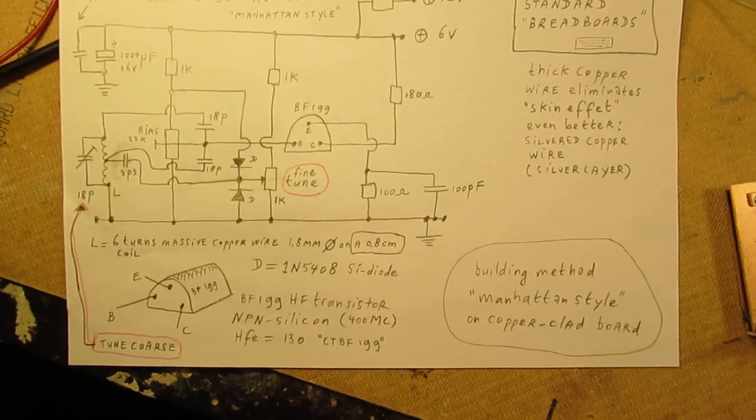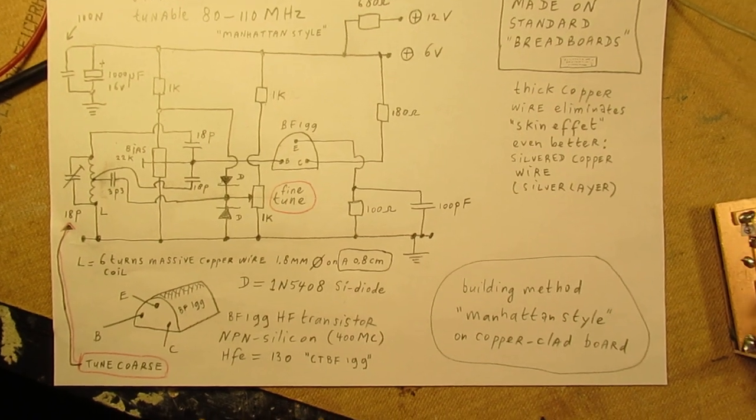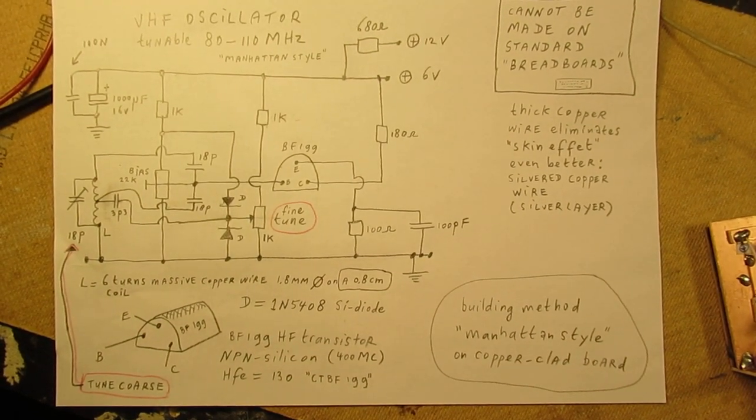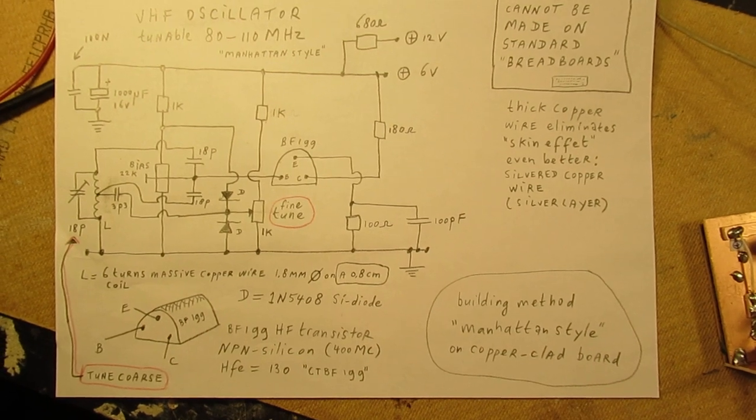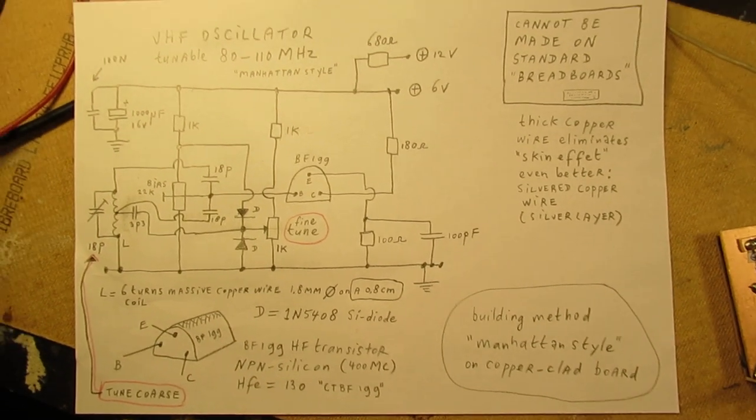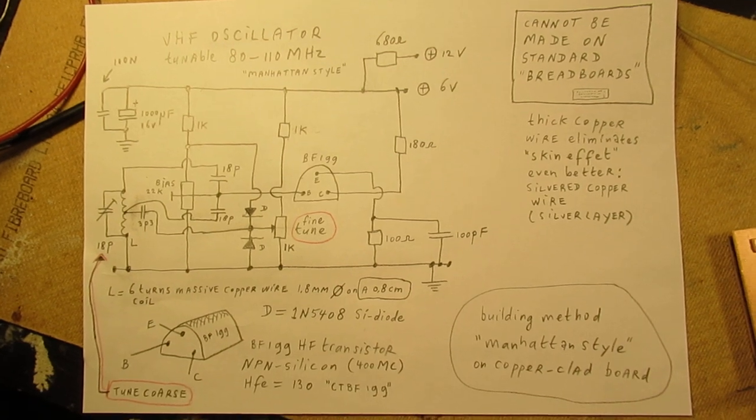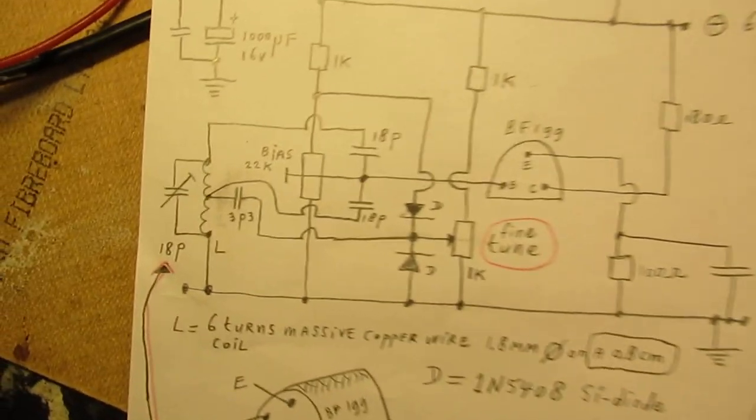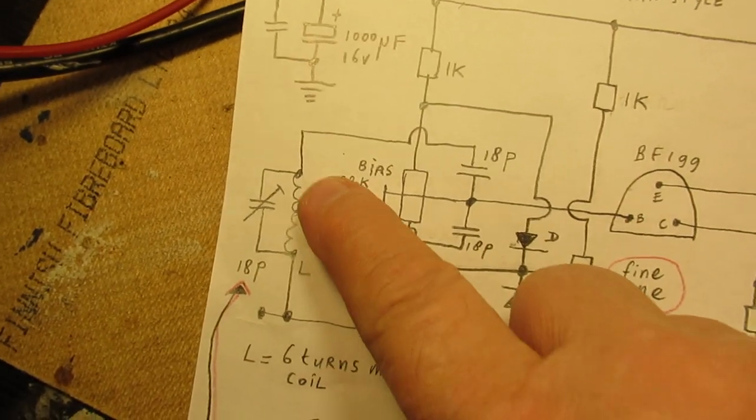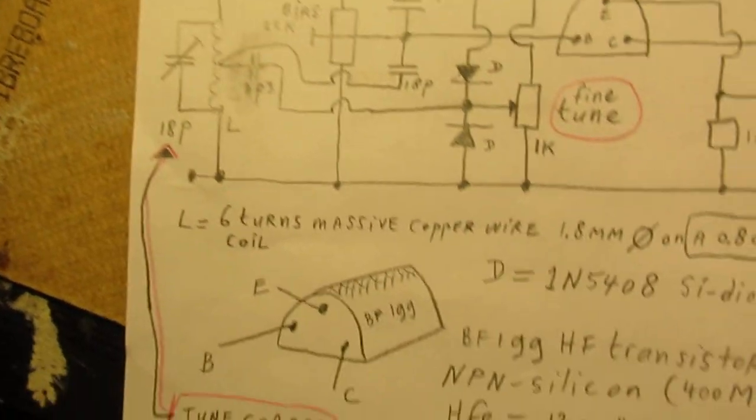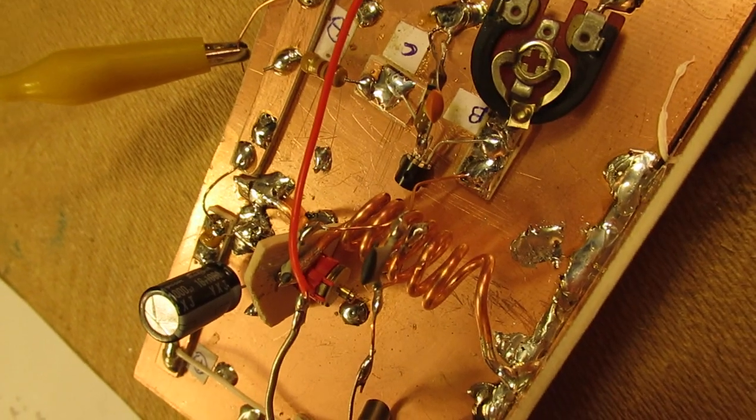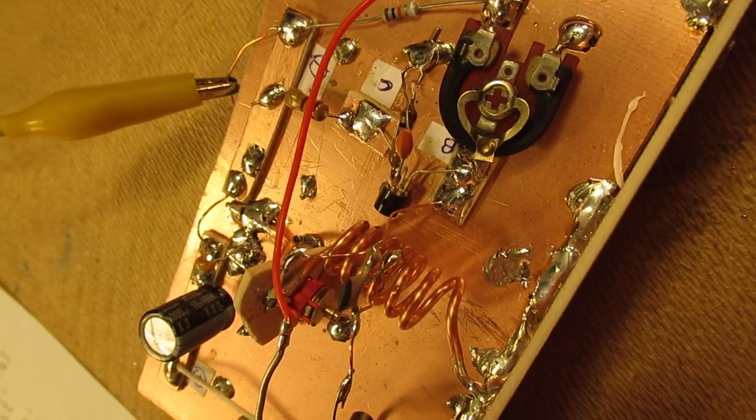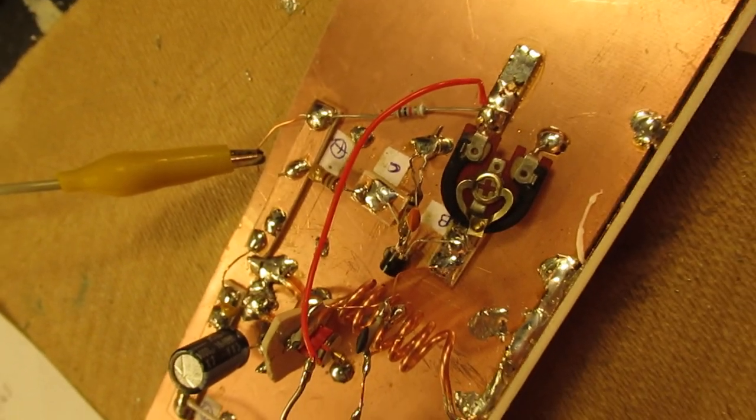I'm more or less absolutely sure that this oscillator is usable for VHF experiments between say 80 MHz and 120 MHz, and perhaps even higher. Of course in that case the coil has to have less windings. Now it is 6 turns here.